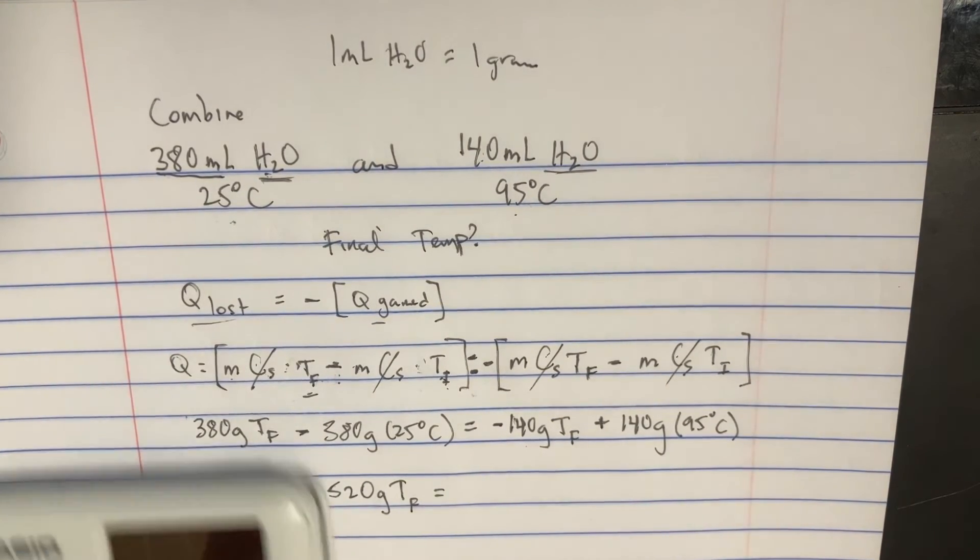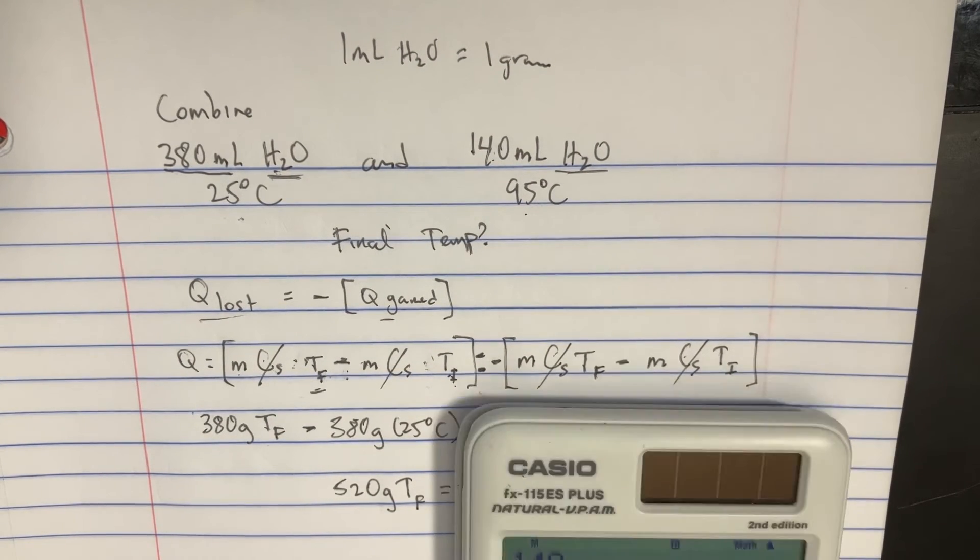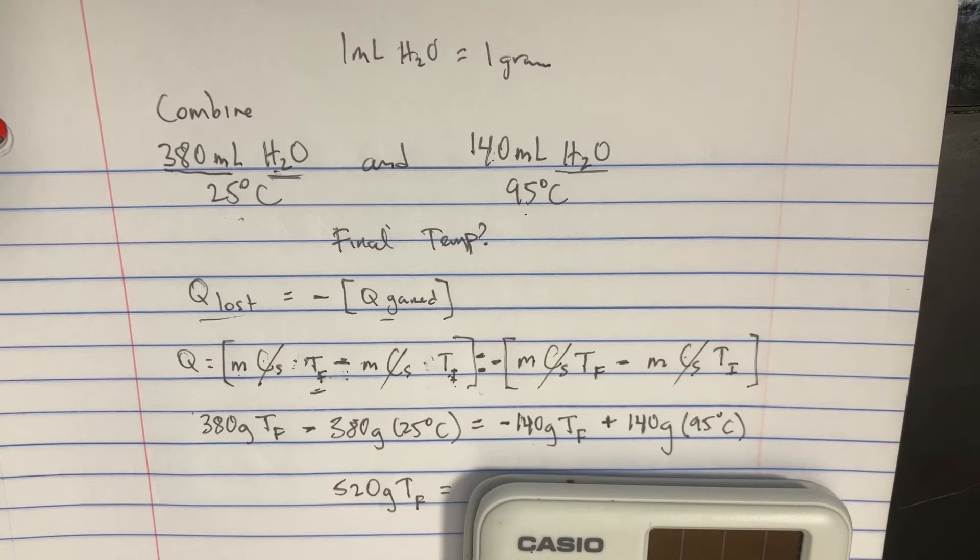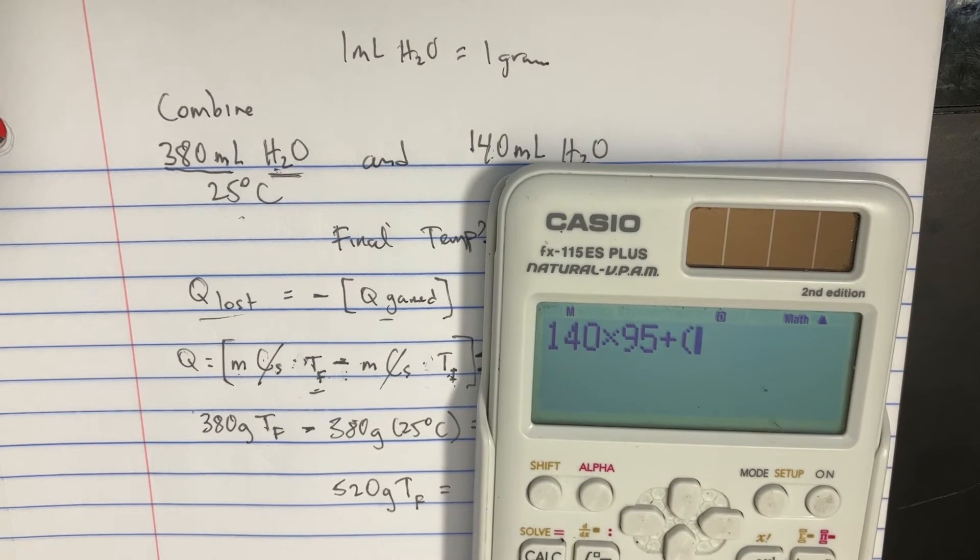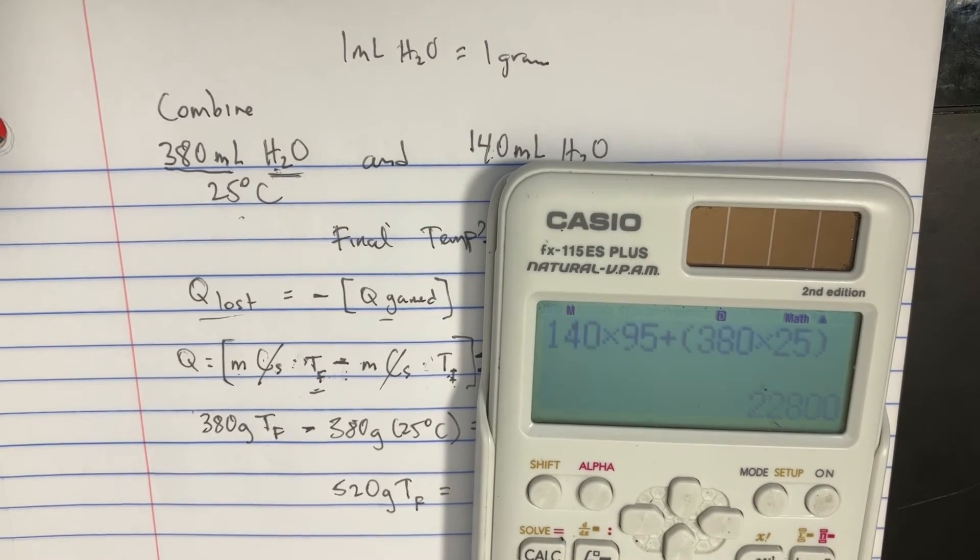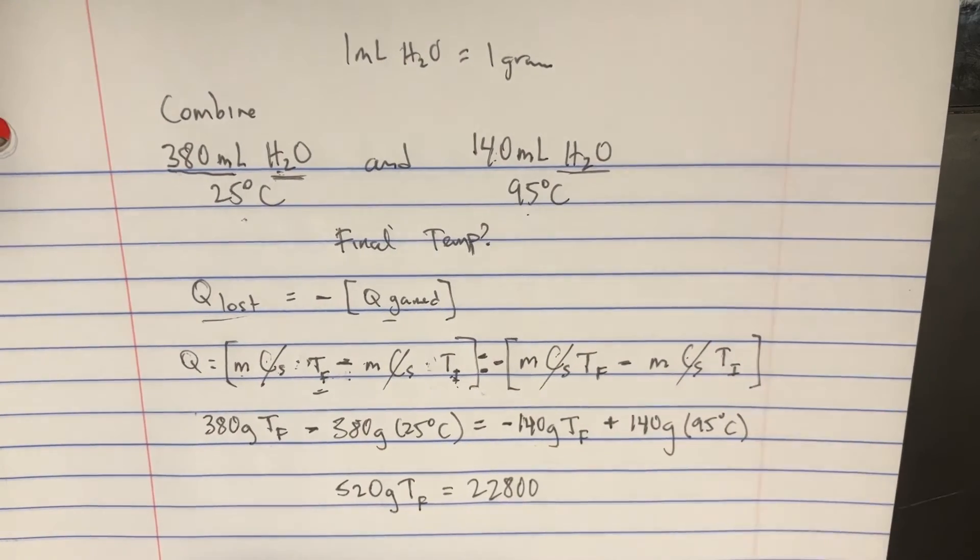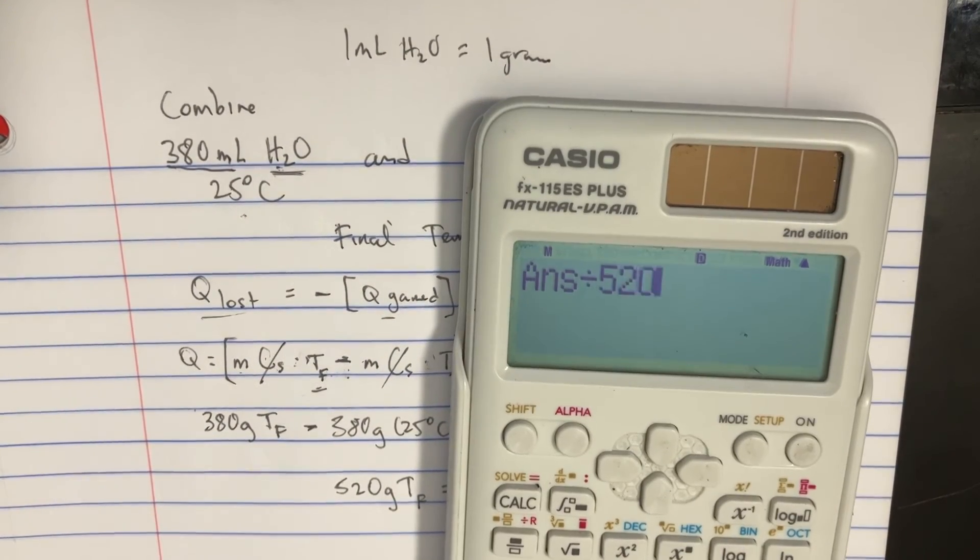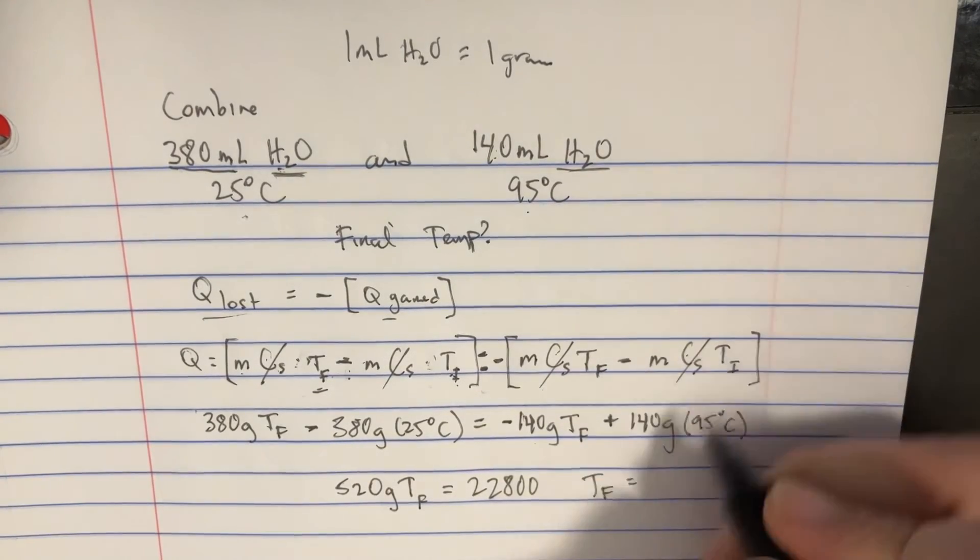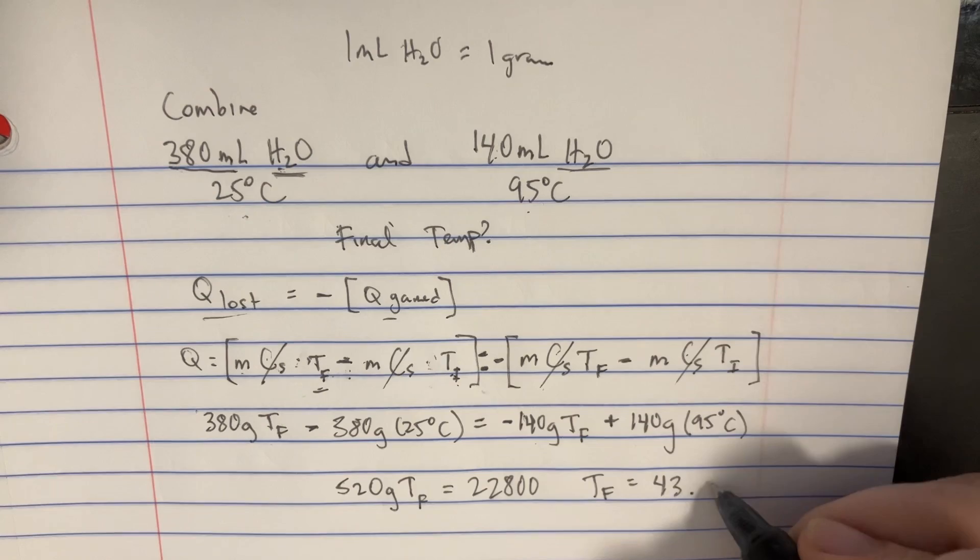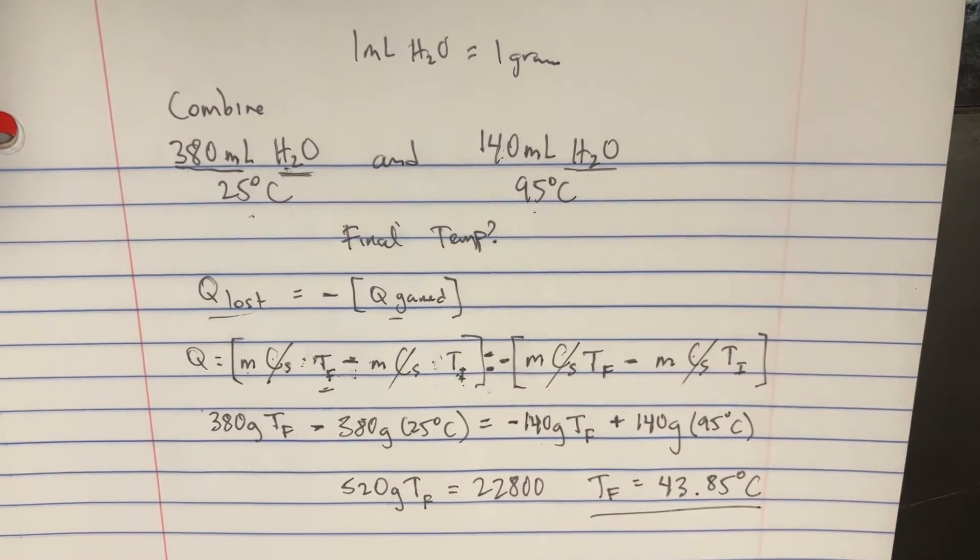And we set that equal to, this is a little bit more, 140 times 95, and then we're going to just add 380 times 25. And so we get this pretty big number here, 22,800. And now we can just divide this by the 520. So we should get our final temperature is 43.85 degrees Celsius here. Bam! Not too bad.